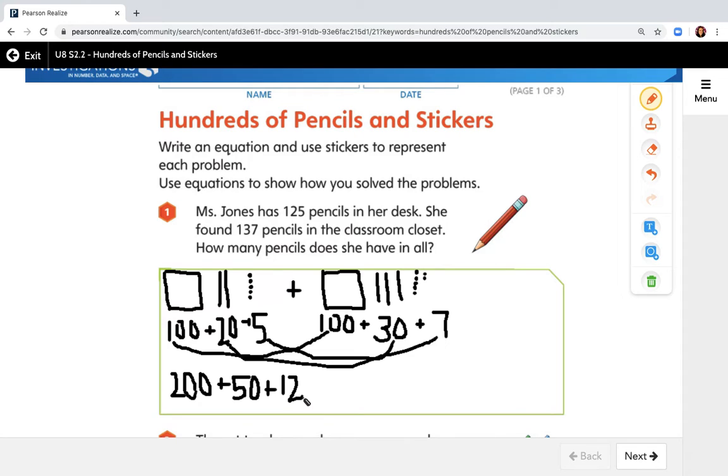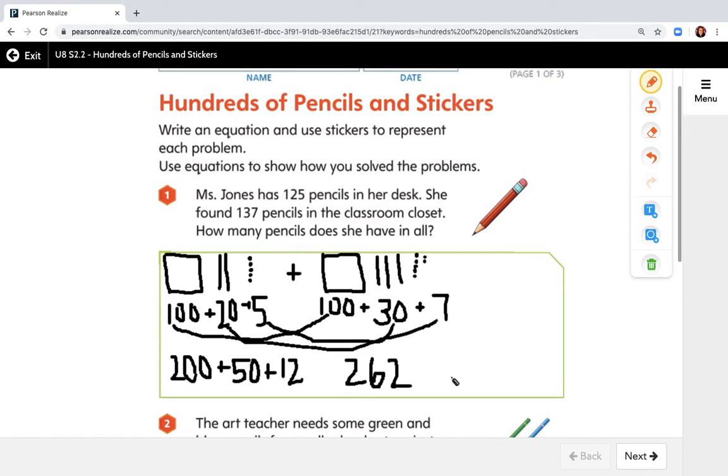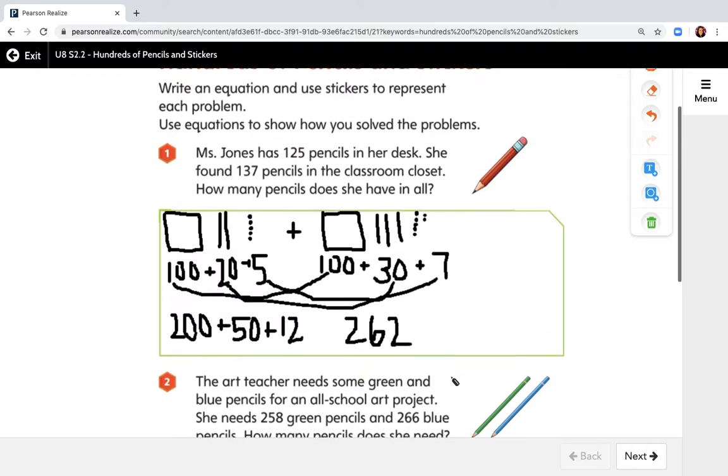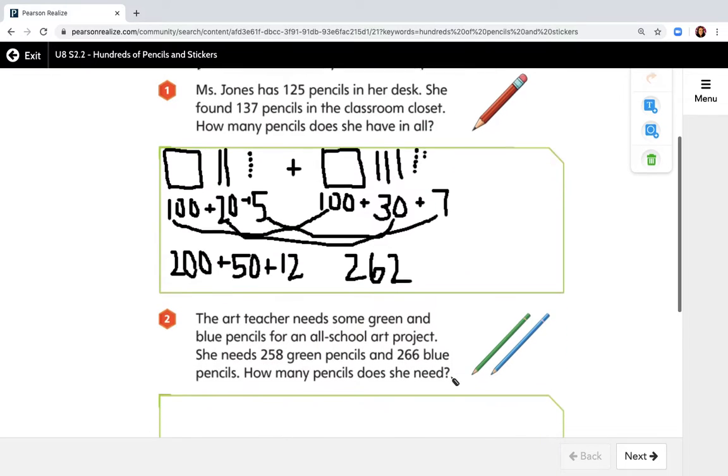Because I know that 5 plus 5 is 10. And 7 is 2 more than 5. So now I'm going to add these all together. So I know I'm going to have 200. And then 50 plus 12 is 62. So my answer is 262 pencils. There are lots of different ways to solve this problem. So if you used a different way and got the same answer, that's what mathematicians do. They use lots of different strategies.